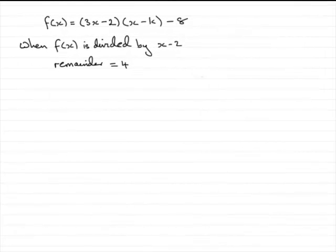Now this part of the question, we're told that when f(x) is divided by x minus 2, the remainder is equal to 4, and asked to find the value of k.